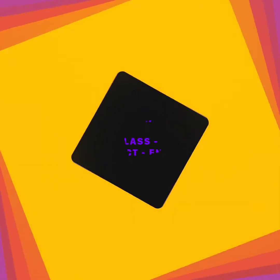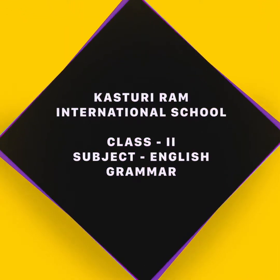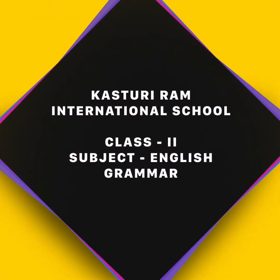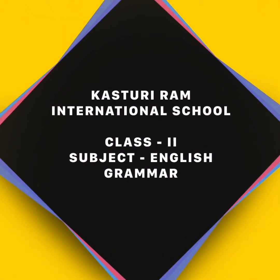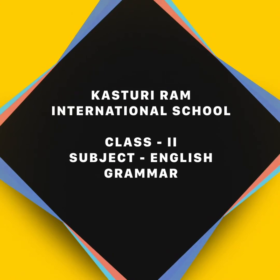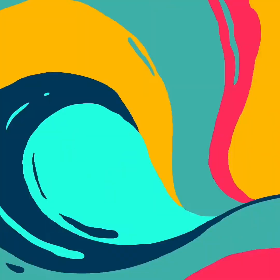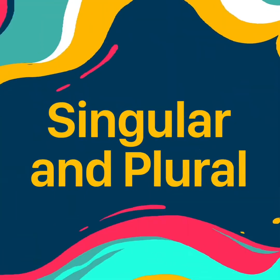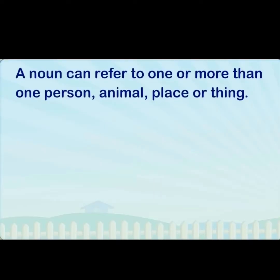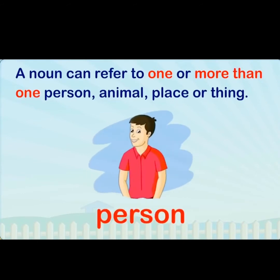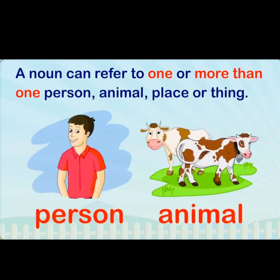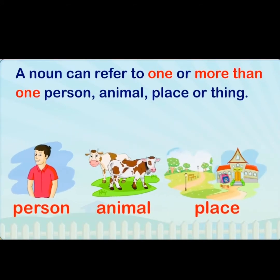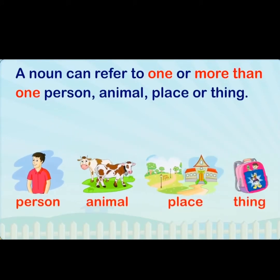Hello students, today we will study English grammar and our today's new topic name is Singular and Plural. A noun can refer to one or more than one person, animal, place or thing.